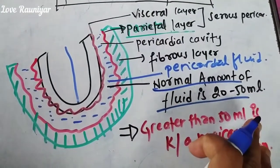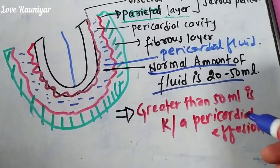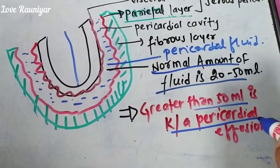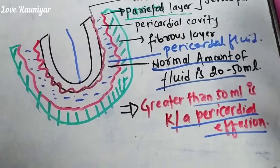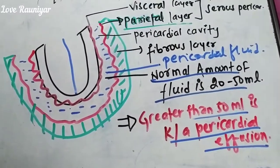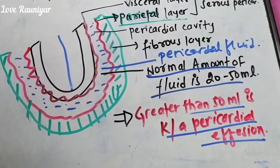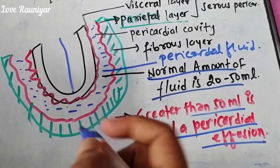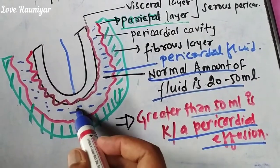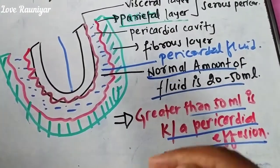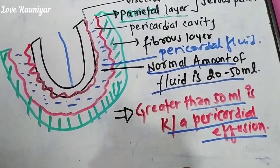But if the fluid level is greater than 50 ml, we call it pericardial effusion. So pericardial effusion is defined as fluid in the pericardial space or cavity greater than 50 ml.